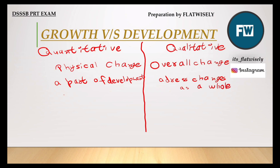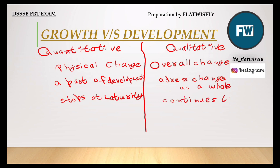Growth occurs during a certain period of life — you can say that it stops at maturity. But development continues throughout life — until death, you remain in a state of development.